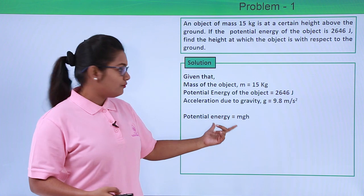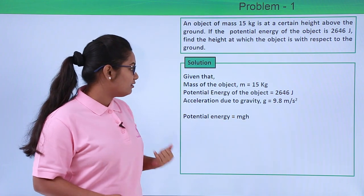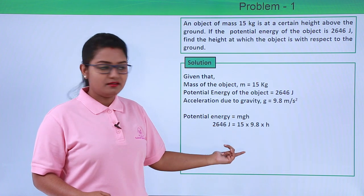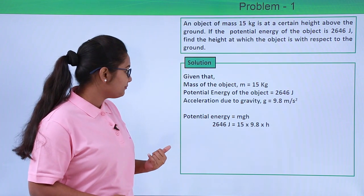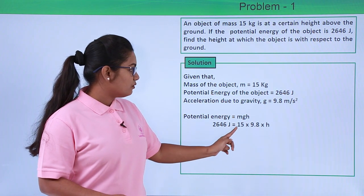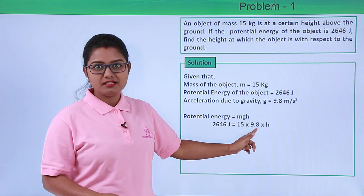We can find the height by substituting all the values and doing some mathematical calculation. So we have 2646 joules equals 15 multiplied by 9.8 multiplied by height h.